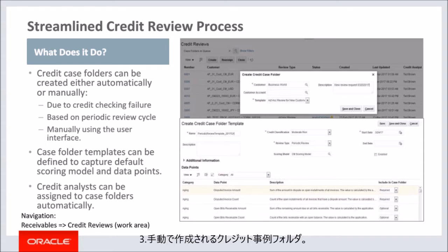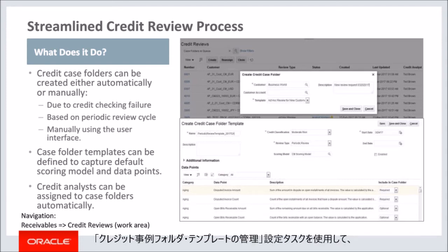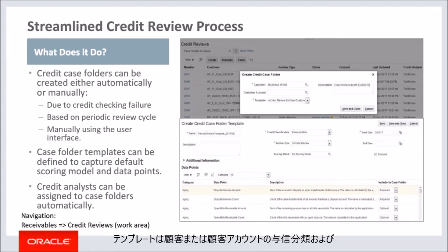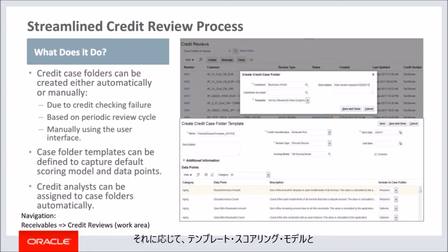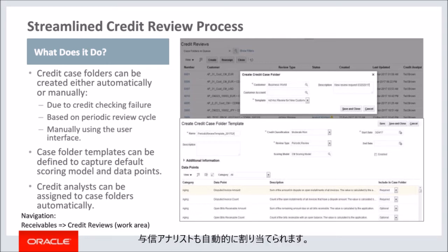Third, credit case folders can be created manually. To handle any ad hoc credit review requests, credit analysts can create credit case folders on the credit reviews page. You can use the manage credit case folder templates setup task to define credit case folder templates to capture the default scoring model and the data points to include in a case folder. When the case folder is created automatically, a template is selected based on the credit classification of the customer or customer account and the review type such as periodic review. The template scoring model and data points are applied to the newly created case folder. Each case folder is also automatically assigned a credit analyst based on the credit analyst setting in the customer or customer account profiles.